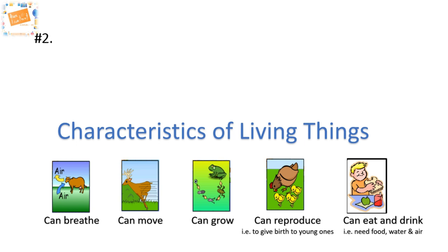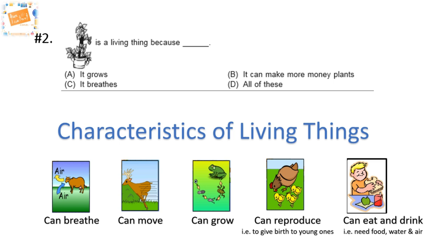A similar question: it shows a plant and says it is a living thing because — A: it grows, B: it can make more plants, C: it breathes, or D: all of these. Yes, the answer is D — all of these. It does grow as a living thing, from seed to plant. It can make more plants, so it can reproduce — also a function of a living thing. It breathes — again a feature of a living thing. Hence the answer is all of these.